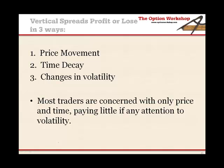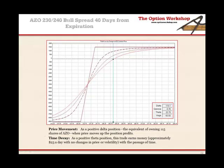Let's go ahead and take a look at an example. What I've got here is an AutoZone 230/240 bull spread with 40 days to expiration. Here's price now — as price goes up, you can see how the spread gains in money. This is our profit here and our loss here. I've put the deltas or Greeks of this position in here to show that this position is the equivalent of owning 115 shares of AutoZone. So if I sold 115 shares of AutoZone against this position, we'd be completely flat, which is what a market maker would do. You're very bullish in this position — you want it to go up.